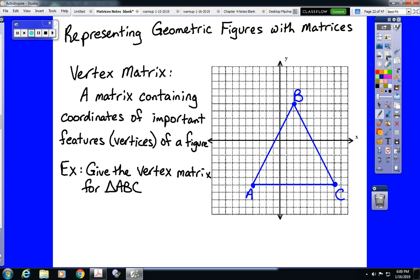What we do is we write what's called a vertex matrix. A vertex matrix is a matrix which contains the coordinates of important features, i.e. your vertices of a figure. So this particular shape, triangle ABC, has three vertices: point A, point B, and point C.